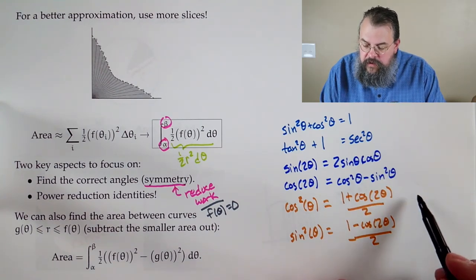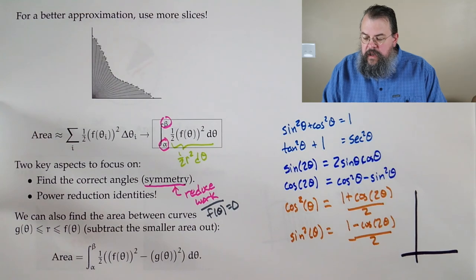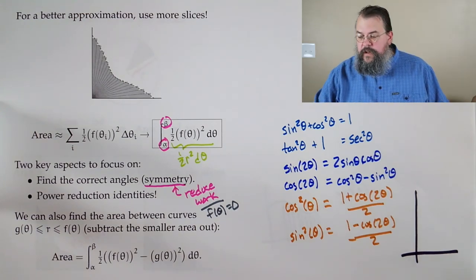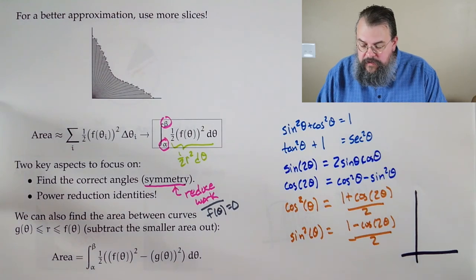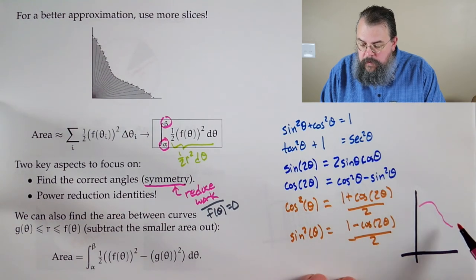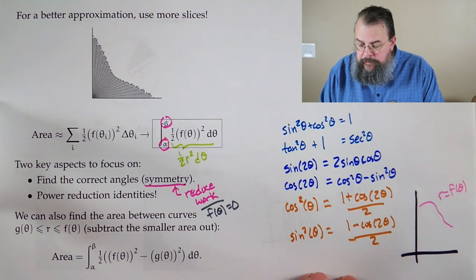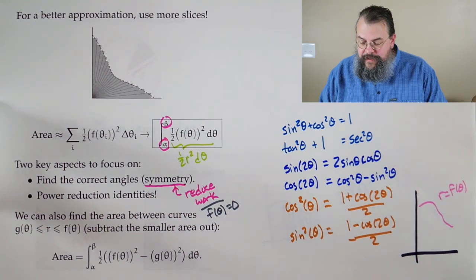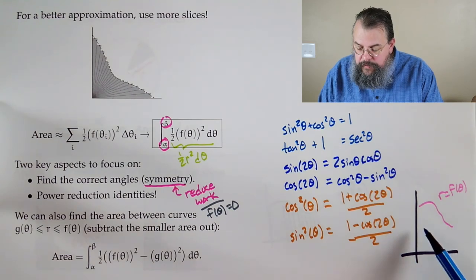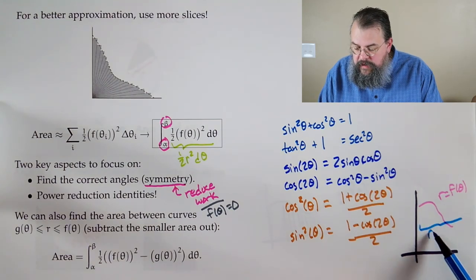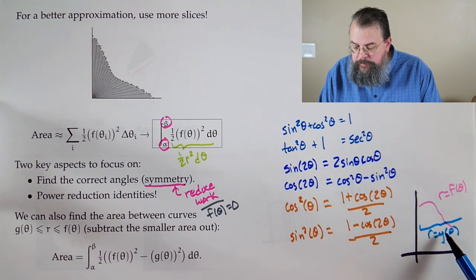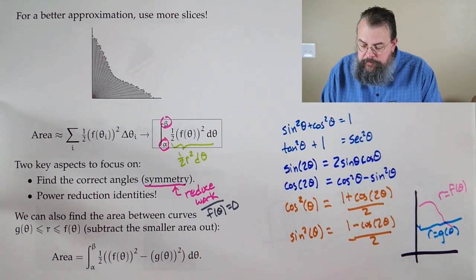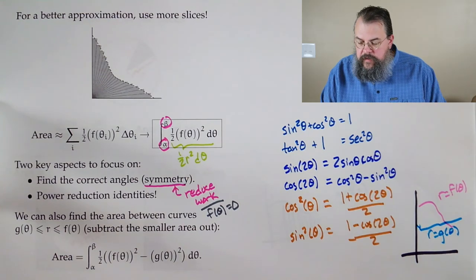Well, for that, what you should think of is you have your coordinate system, and then you have some outside curve. So, in other words, one that's further away. So, maybe we'll call this one r equals f of theta. And then you have some inside curve. Something that's closer. You know, you might have r equals g of theta. And you want to find some area in between.